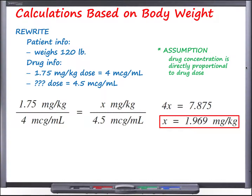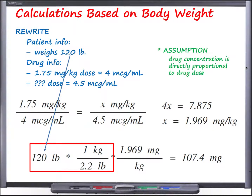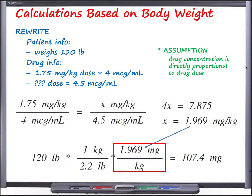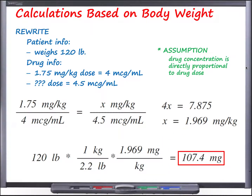Now we calculate the actual dose for this patient. Starting with the fact that they weigh 120 pounds, we convert to kilograms by dividing by 2.2 — pounds cancel, giving kilograms. We then multiply by the dose of 1.969 mg per kg; kilograms cancel, and the final answer is 107.4 mg. So if we give this 120-pound patient 107.4 mg, that produces the desired blood level of 4.5 mcg per mL.